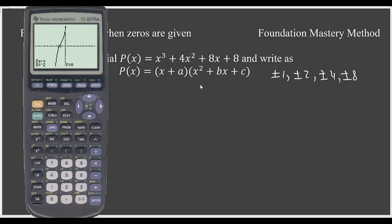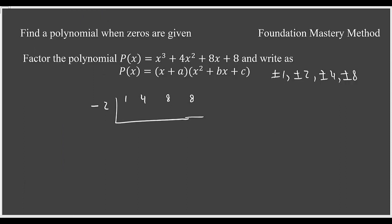Now we can use our synthetic divisions to get other zeros. So we have found graphically that x equals negative 2 is a zero. So we put a negative 2 and then list the coefficients. x to the 3 has 1, x squared has 4, x has 8 and the constant term is 8.